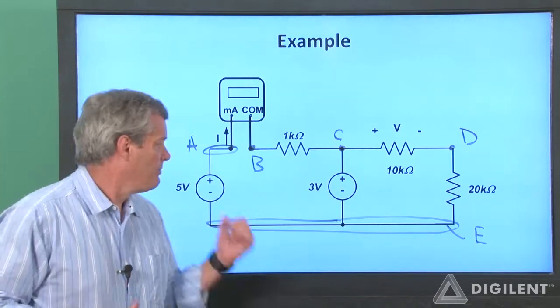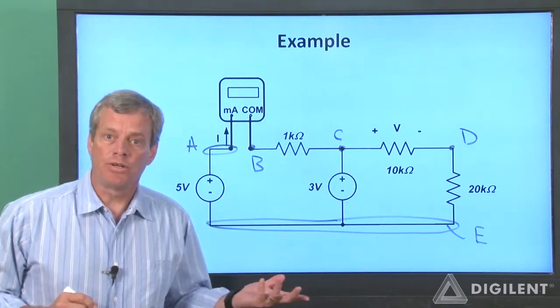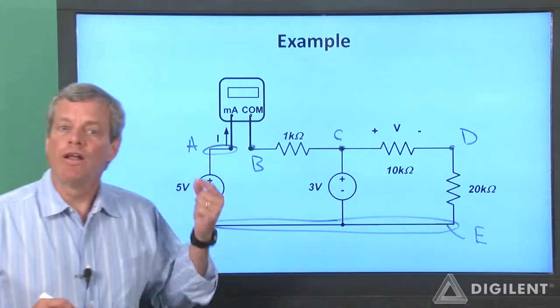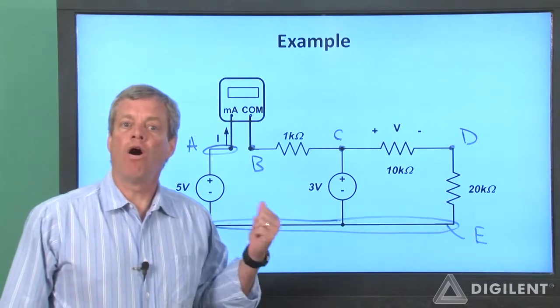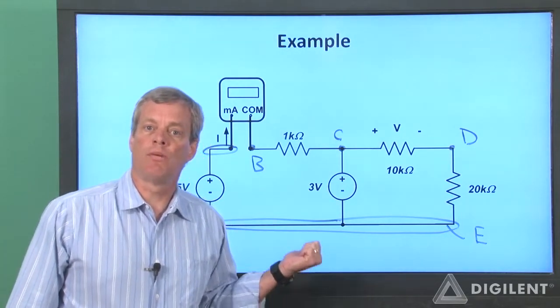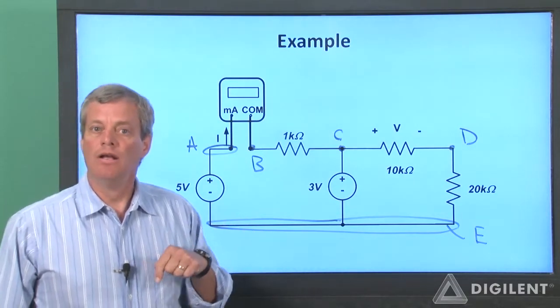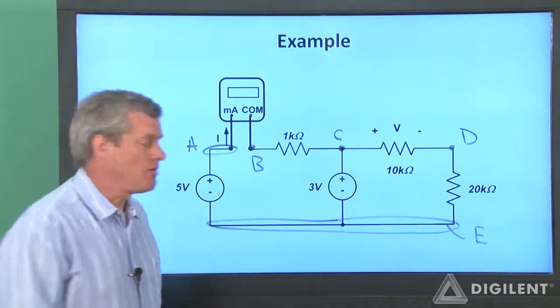Now let's figure out how to implement these sources and where ground needs to be. On this particular circuit we have two sources, a 5 volt source and a 3 volt source. If we want to use the analog discovery to implement our sources, we need to keep in mind that all of the analog discovery sources apply a voltage difference relative to the discovery's ground. This means that the node shared by both sources needs to be our ground.